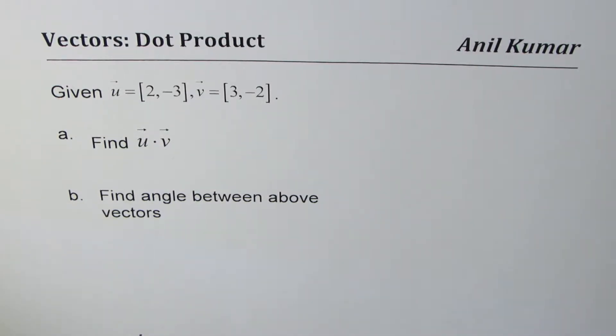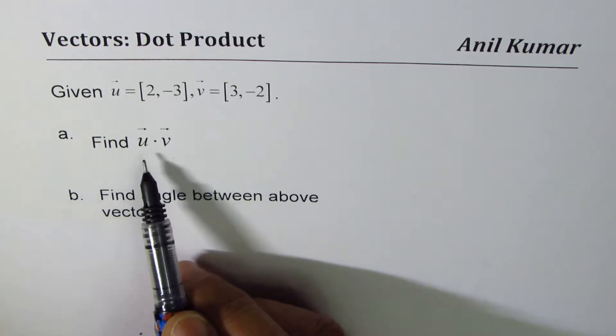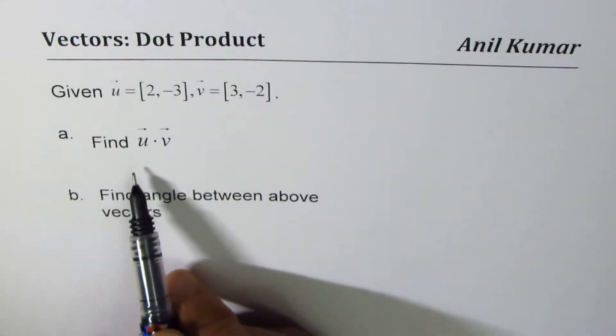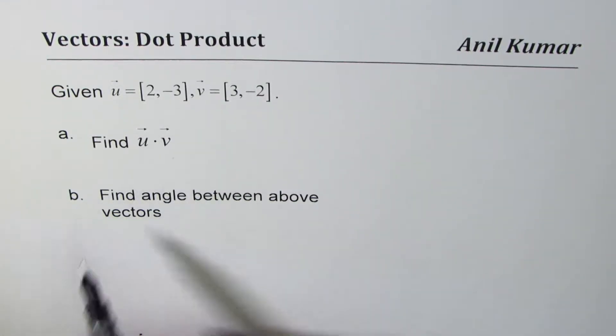I'm Anil Kumar, let's continue with vectors dot product. The question here is you are given vector u equals [2, -3], vector v is [3, -2]. You need to find the dot product of these vectors, that is vector u dot vector v, and part b is to find the angle between these two vectors.